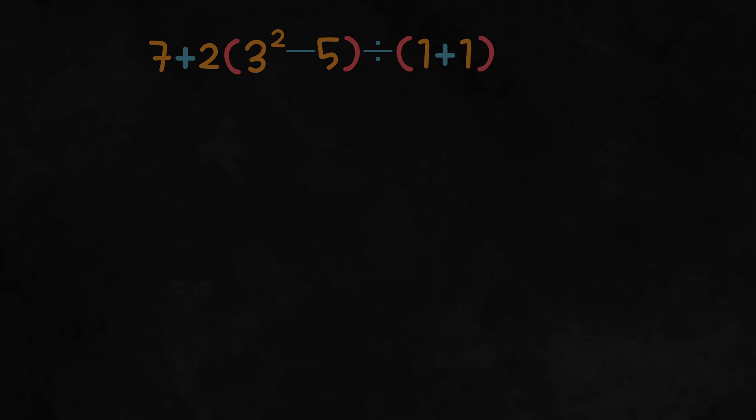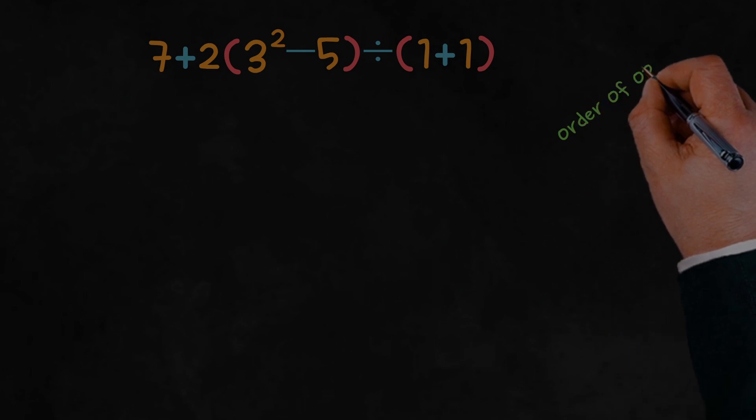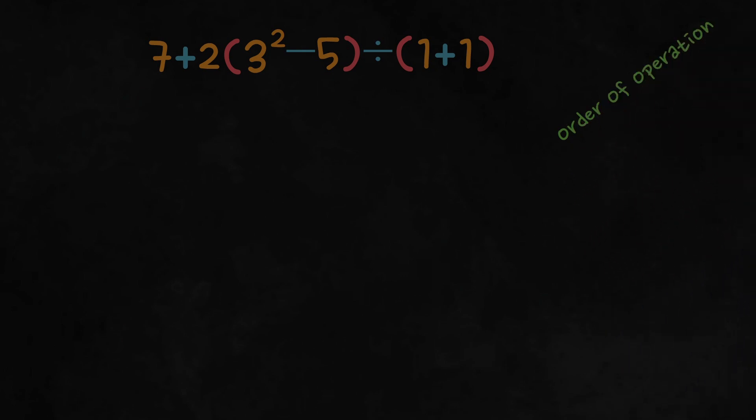This is an expression that involves multiple operations: addition, multiplication, division, and parentheses. Specifically, it's a composite expression that requires us to apply the order of operations to simplify it correctly. What we want to do now is break it down, step by step.